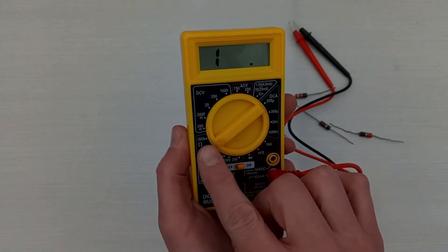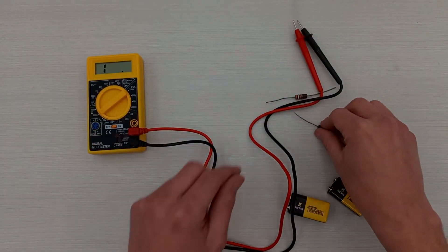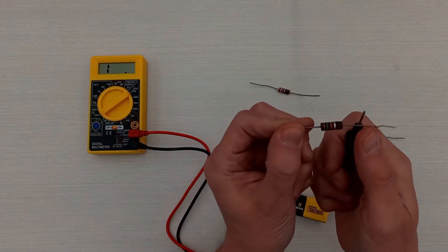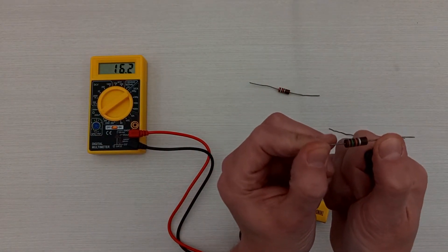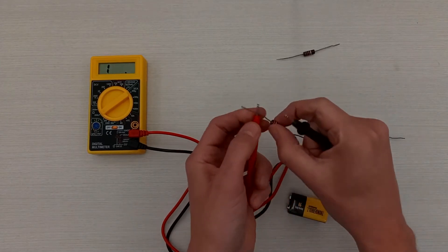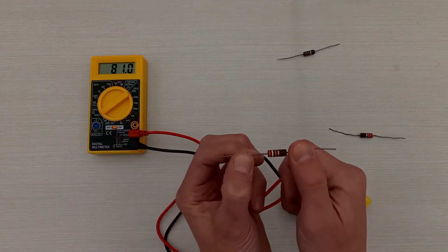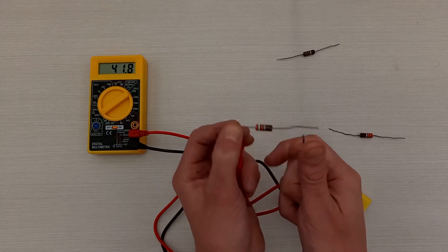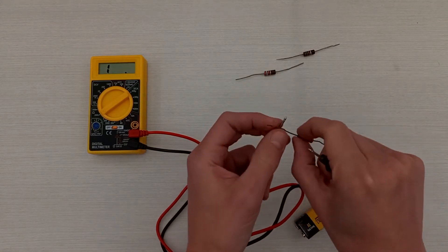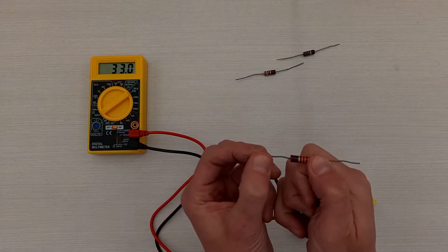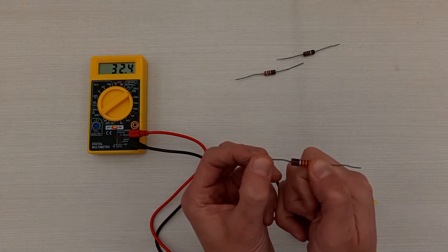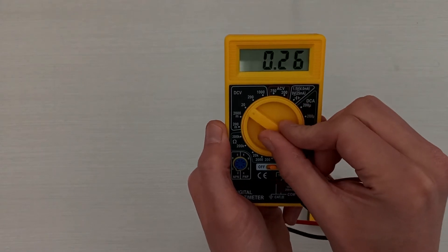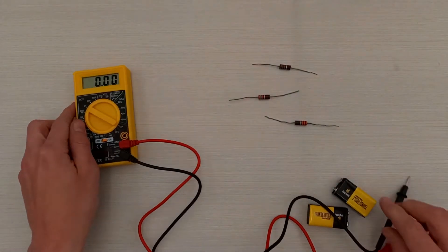Measure the resistance of each resistor using the multimeter. You can hold the probes on the legs of each resistor with your fingers, since the resistance of your body is very high and won't affect the measurement. You'll also want to measure the voltage of the batteries so you can make your predictions.